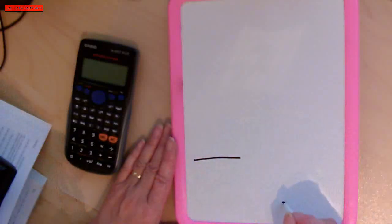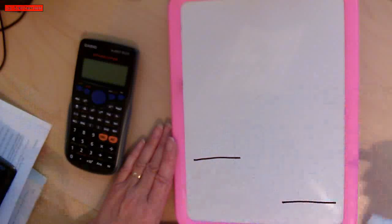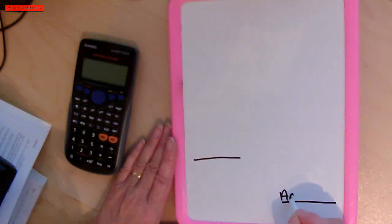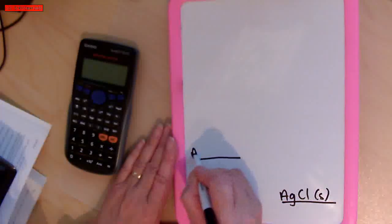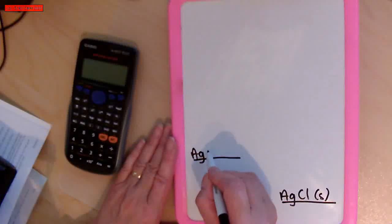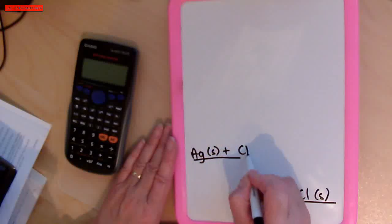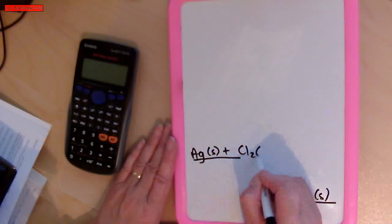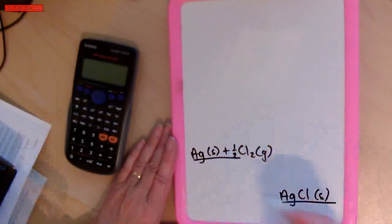We'll have our enthalpy profile and we'll draw the reactants and the products. The product is going to be silver chloride, which is a solid. The reactants — we can always go from the elements. So silver is a solid and chlorine is a gas, and we only need half a mole of chlorine.